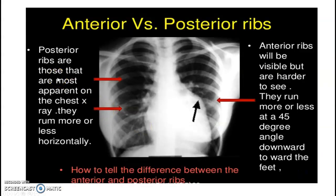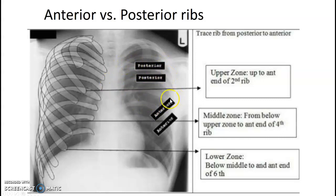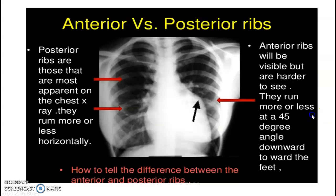Trying to visualize posterior versus anterior ribs is easier if you think of one horizontal and one at an angle. The posterior ribs come straight across. The anterior come at an angle. A helpful trick: think AA — anterior is at an angle. Posterior is straight across.